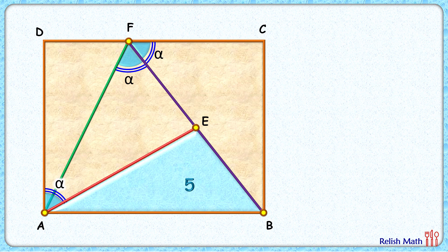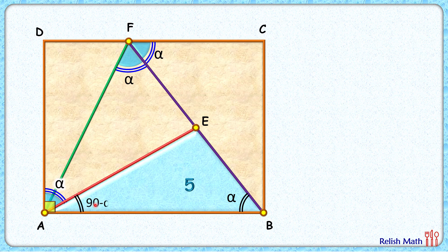This is one of the easiest questions posted on this channel. DC length and AB length are parallel, and FB is the transversal, so if this angle is alpha, then this angle will also be alpha degrees. Angle A is 90 degrees, and part of it is alpha, so the remaining part will be 90 minus alpha. In triangle ABE, applying the angle sum property, we get angle E is 90 degrees.